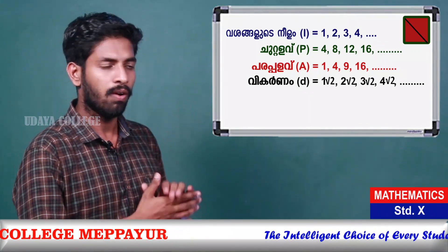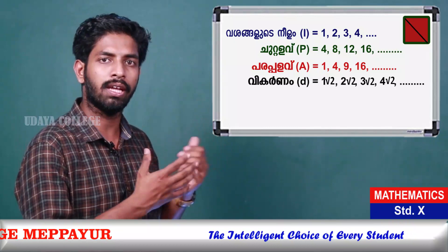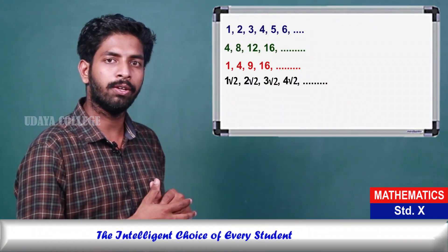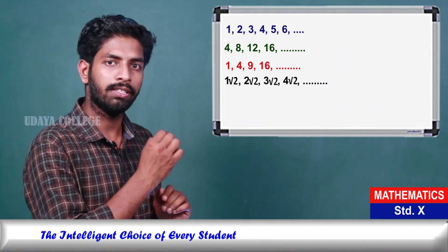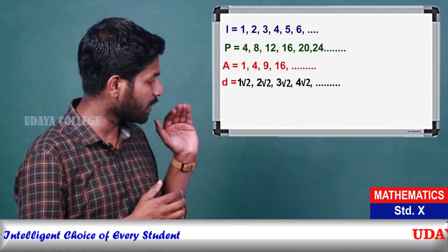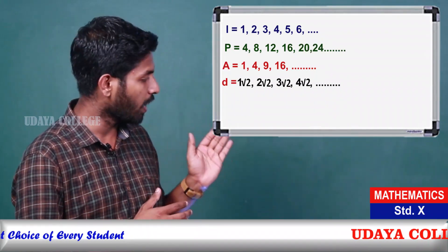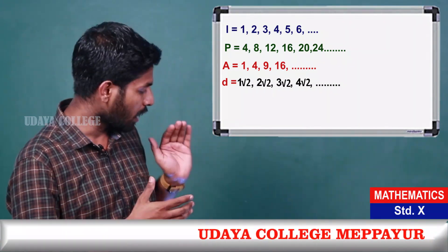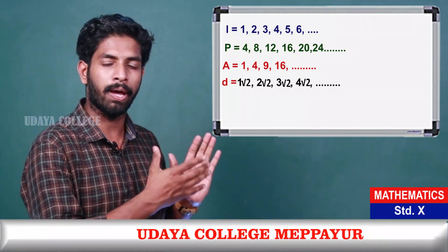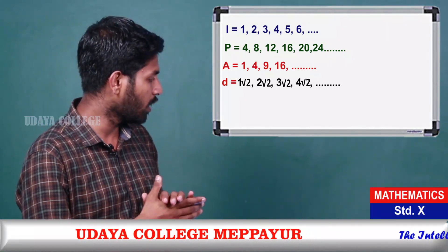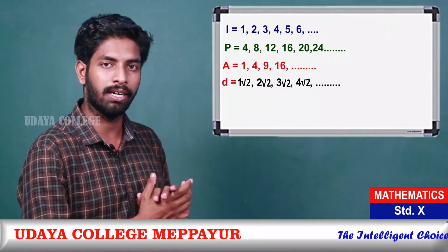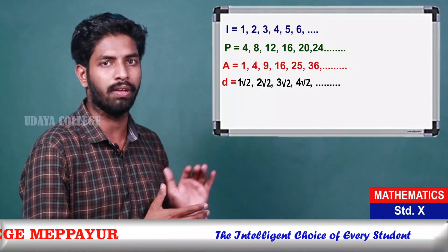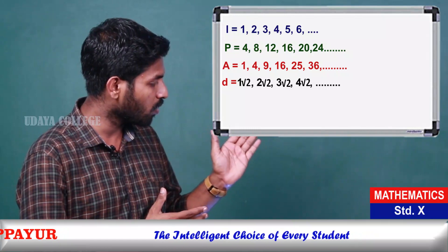First one: length of a side — 1, 2, 3, 4, 5, 6. Then perimeter: 4, 8, 12, 16. Next side 5 gives 5×4 = 20. Side 6 gives 6×4 = 24. That's the area: 1, 4, 9, 16. Side 5: 5 squared = 25. Last one: 6 squared = 36.